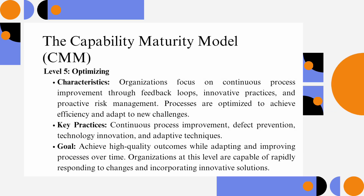Level 5 – Optimizing: Organizations focus on continuous process improvement through feedback loops, innovative practices, and proactive risk management. Processes are optimized to achieve efficiency and adapt to new challenges. Key practices include continuous process improvement, defect prevention, technology innovation, and adaptive techniques. The goal is to achieve high-quality outcomes while adapting and improving processes over time. Organizations at this level are capable of rapidly responding to changes and incorporating innovative solutions.